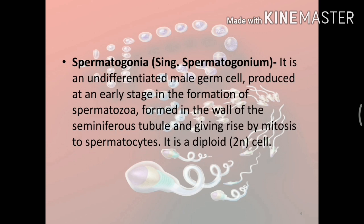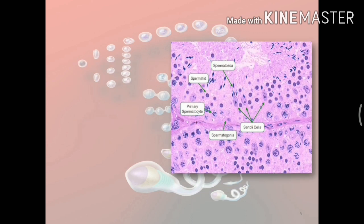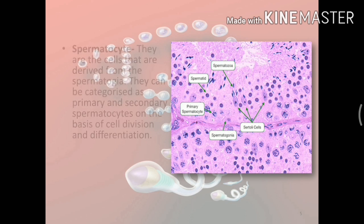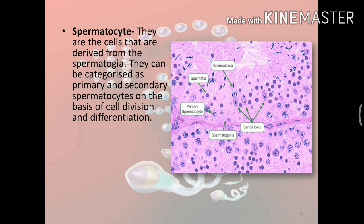Next is spermatogonia — it is an undifferentiated male germ cell produced at an early age in the formation of spermatozoa, formed in the walls of the seminiferous tubule and giving rise by mitosis to spermatocytes. It is a diploid cell. In this histological section we can find spermatogonia cells, spermatozoa, as well as other cells.